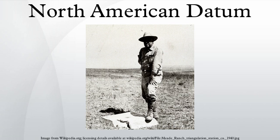In 1901, the United States Coast and Geodetic Survey adopted a national horizontal datum called the United States Standard Datum, based on the Clark Ellipsoid of 1866. It was fitted to data previously collected for regional datums, which by that time had begun to overlap.